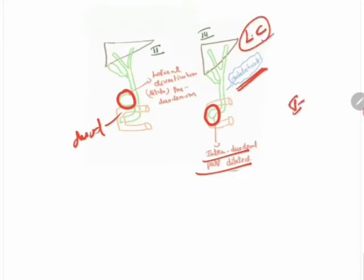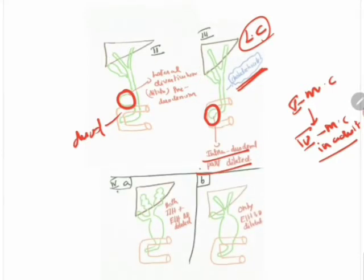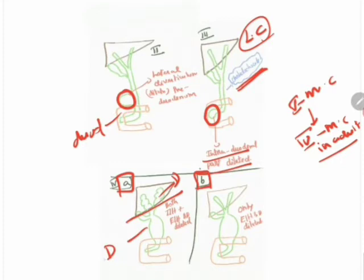Type 1 is the most common, followed by type 4. In adults, type 4 is the most common type. Type 4 can be divided into 4A and 4B. Type 4A involves dilatation of both the intrahepatic and extrahepatic bile ducts — this is the most common subtype. In type 4B, only the extrahepatic bile duct gets dilated.